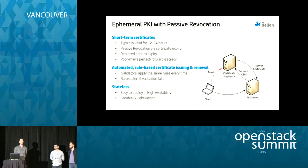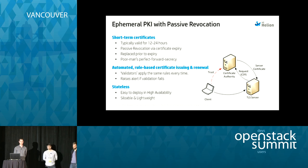Replacing the private key is a client decision, but when certificates are bounced every 12 to 24 hours, it's not a massive challenge to replace the private keys as well — at that point you have a poor man's version of perfect forward secrecy. With passive revocation there's no need for CRLs or OCSP. In the event a certificate needs to be revoked, you just wait 12 hours and don't issue it another one.